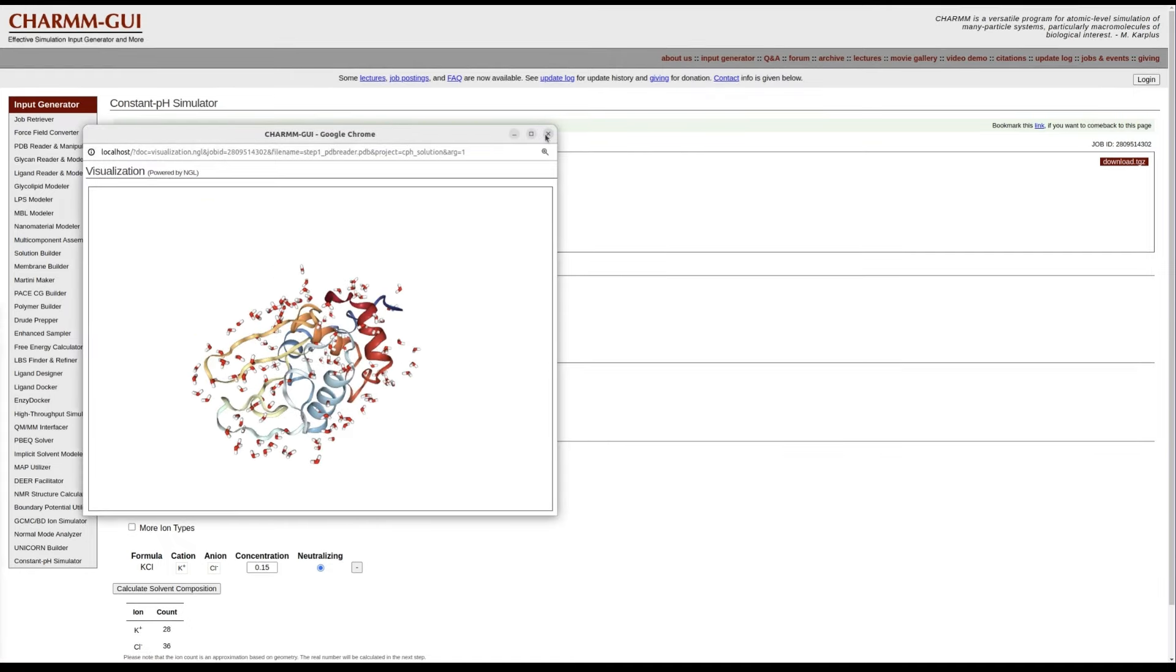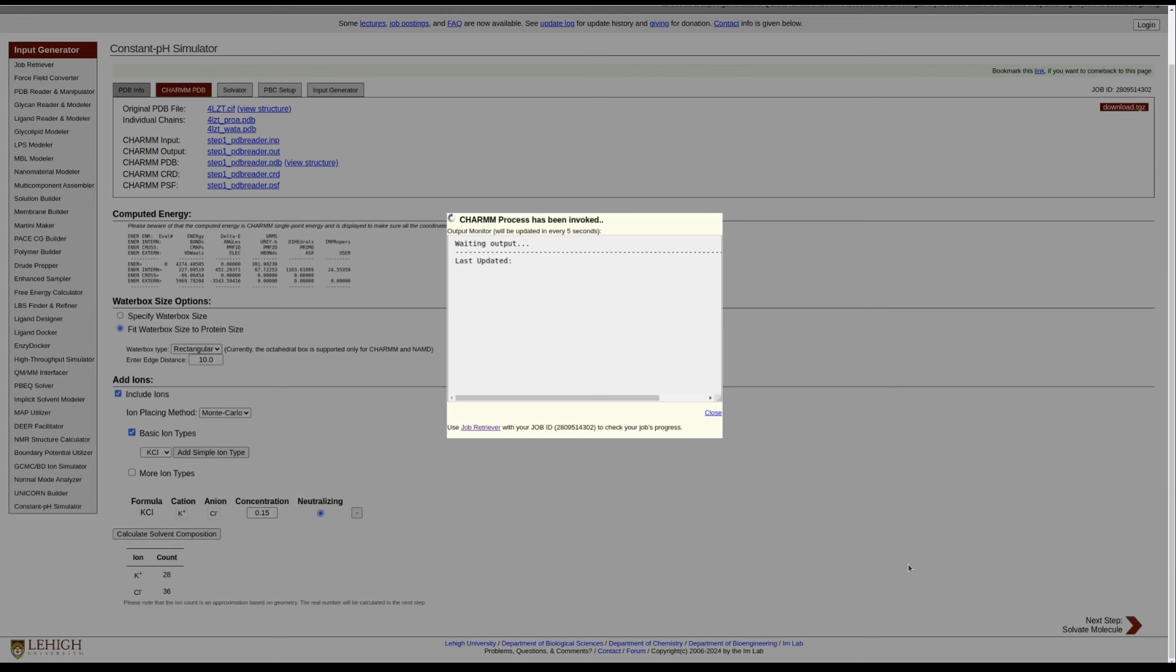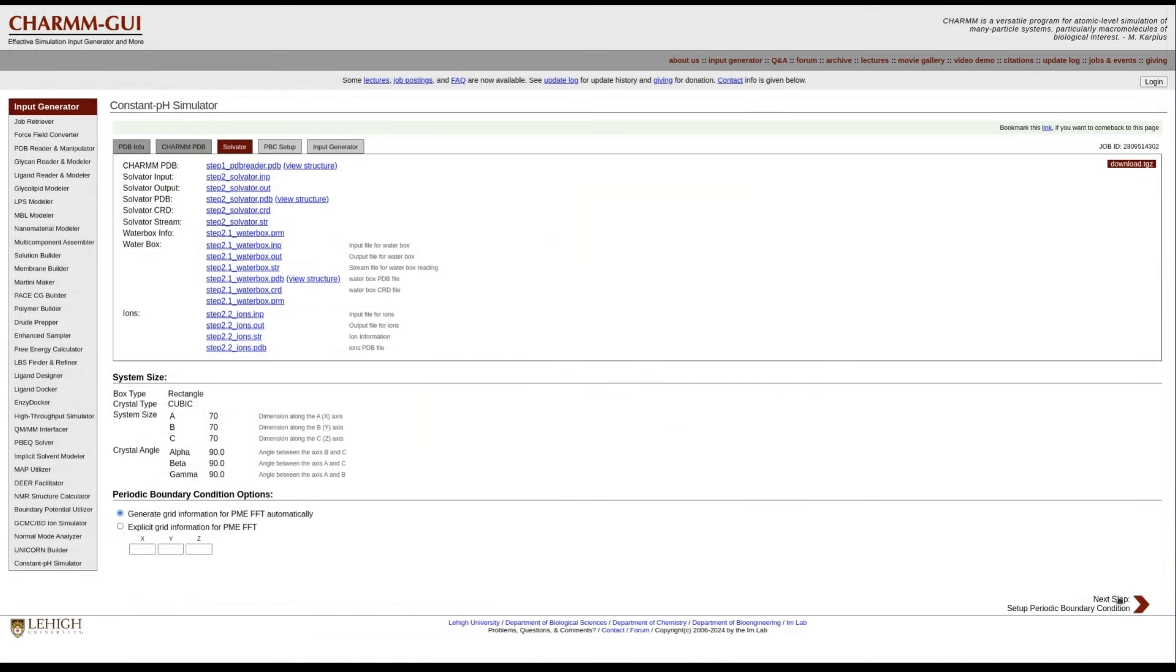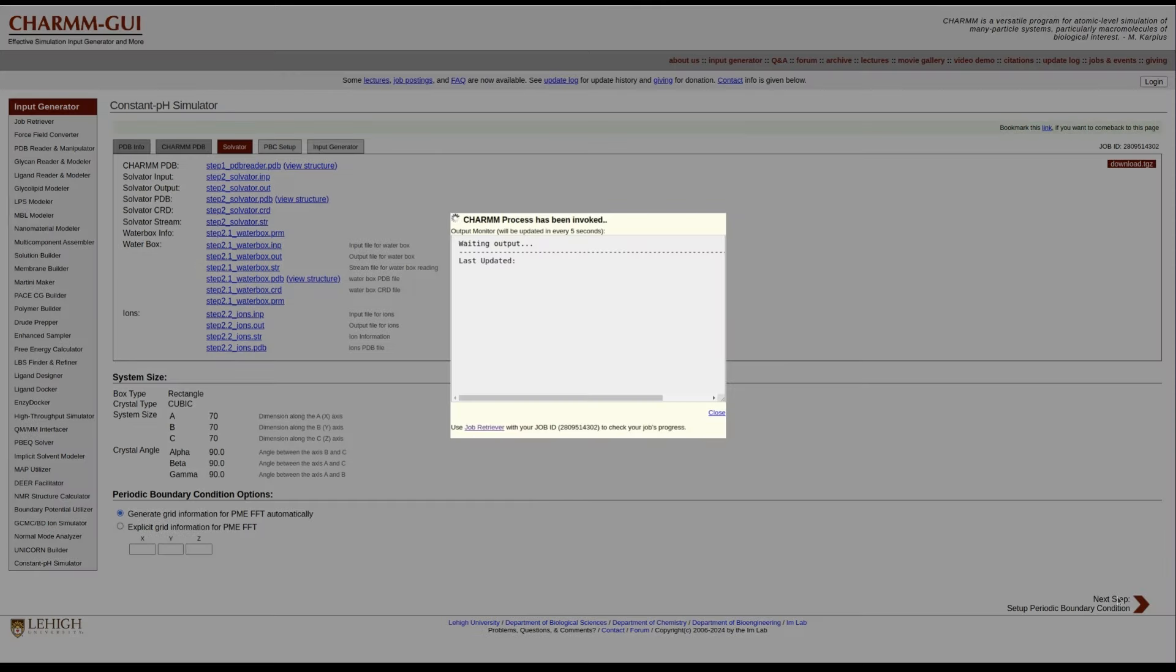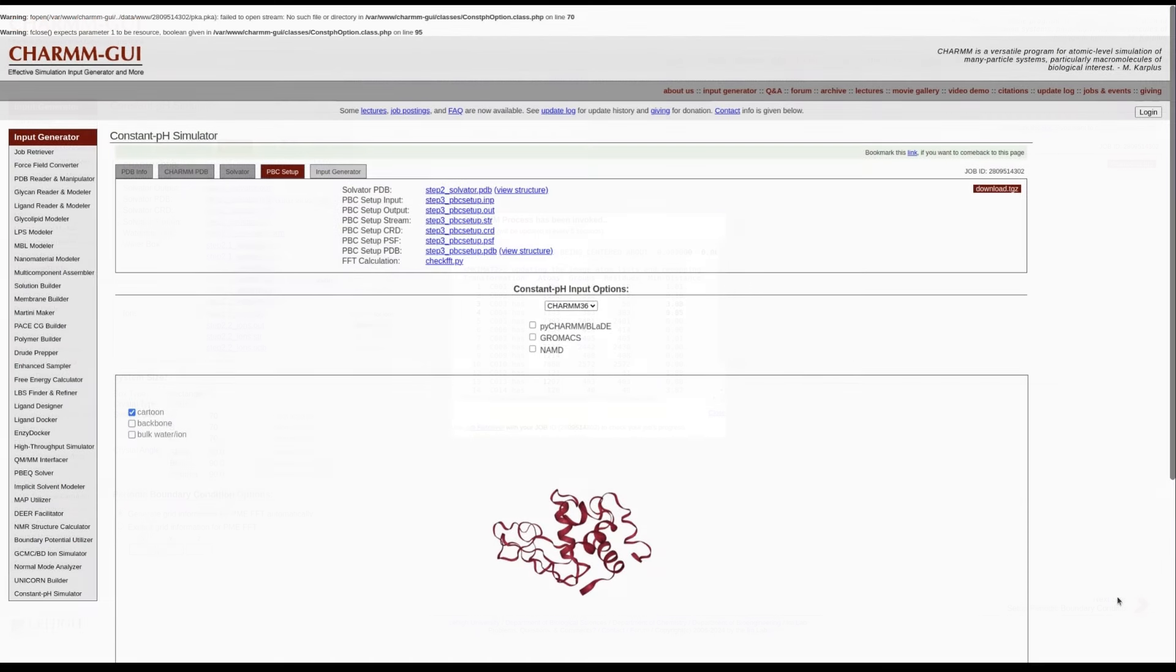Once done, you should view the structure to ensure that it was read correctly. We solvate the protein and add ions to mimic physiological conditions. If you have any question regarding this step, please see the video demos for Solution Builder. With default settings, we built a solvated system and go into the CPHMD simulator-specific input generation page.